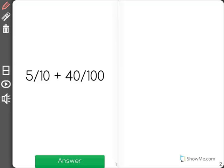5 out of 10 plus 40 out of 100. Now the problem is we cannot add these right now because they do not have the same denominator. One has 10 and the other has 100.